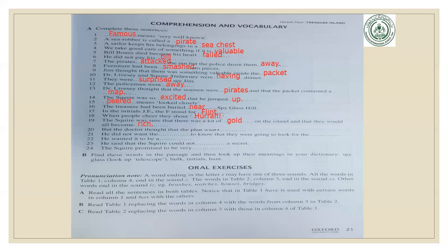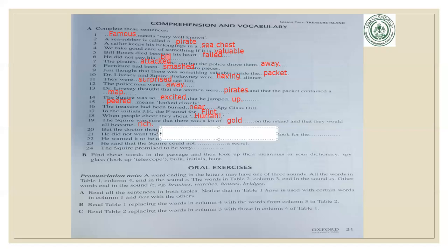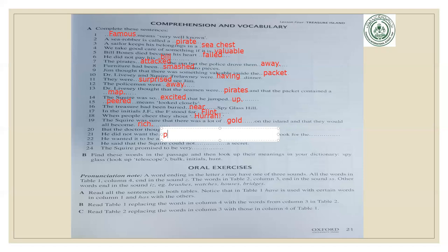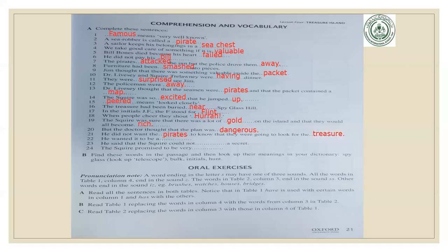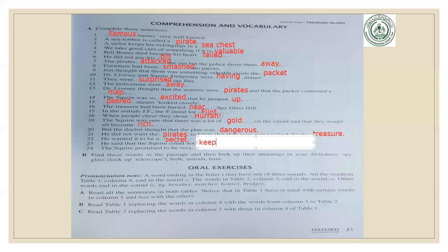Number twenty: 'But the doctor thought the plan was dash' — dangerous. Number twenty-one: 'He did not want the dash to know they were going to look for the dash' — he did not want the pirates to know they were going to look for the treasure. Number twenty-two: 'He wanted to be a dash' — secret. Number twenty-three: 'He said that the Squire could not dash a secret' — could not keep a secret. Number twenty-four: 'The Squire promised to be very dash' — very careful.